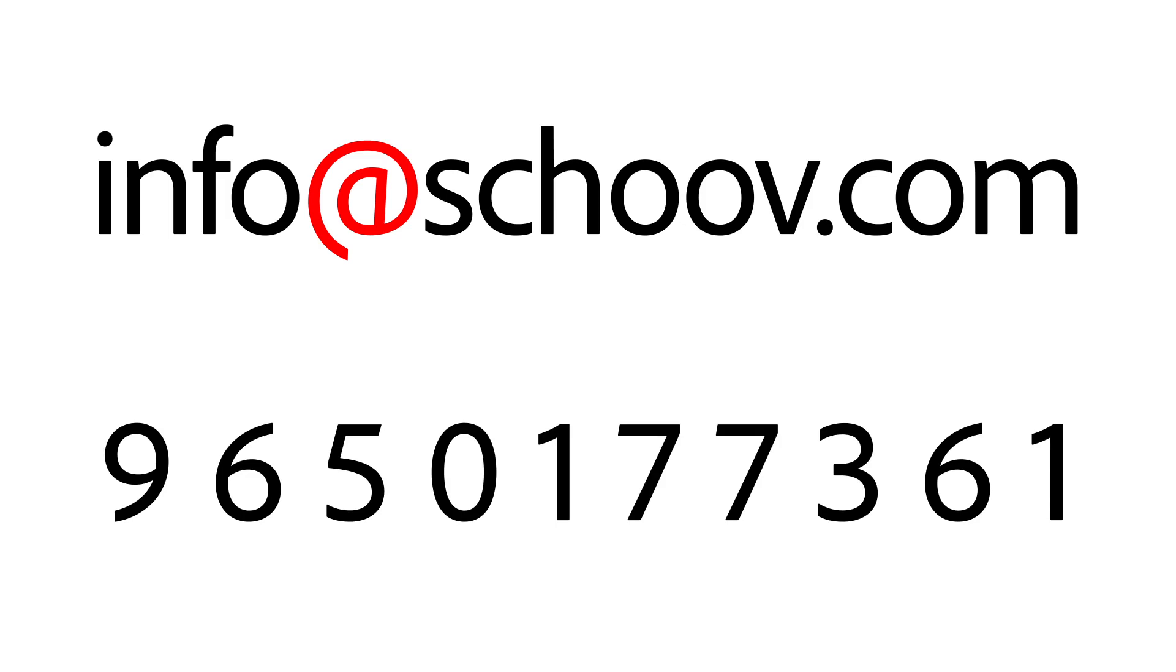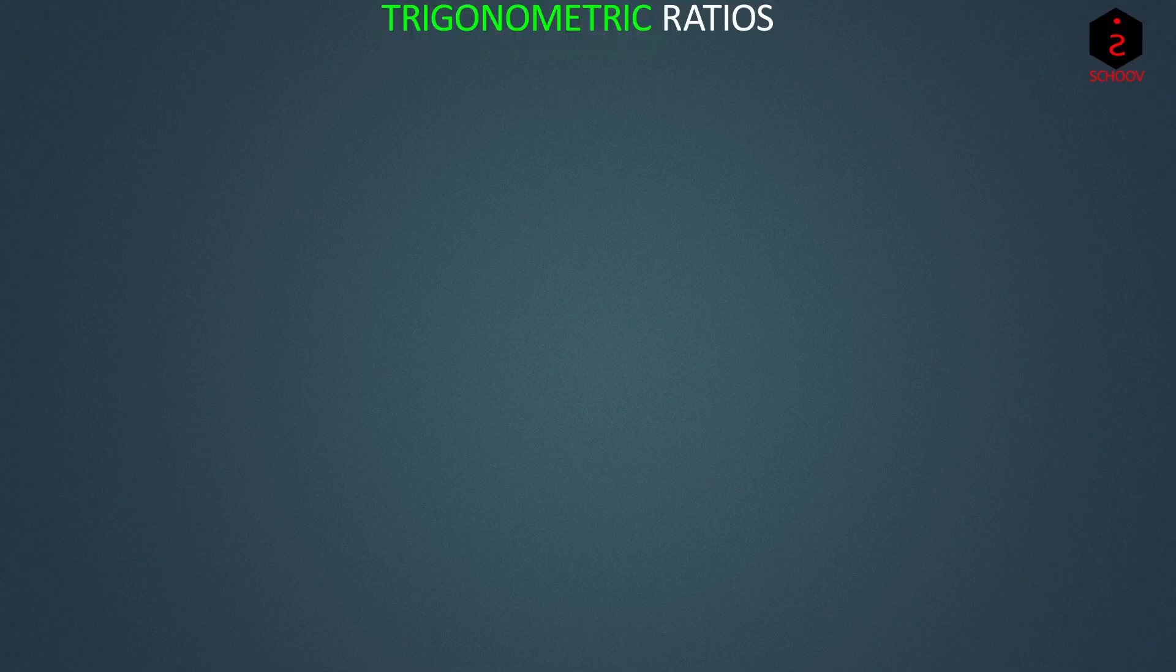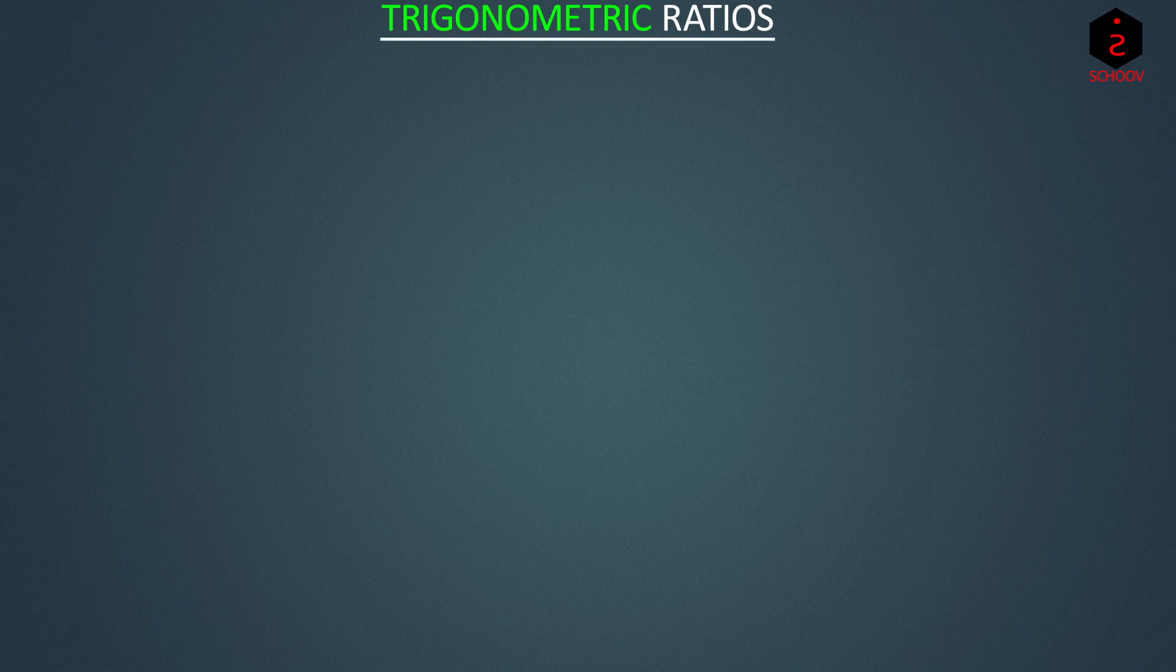Last time we learned how Trigonometry can help us through ratios of angles. Now let's learn these Trigonometric ratios. Let's start with 60.